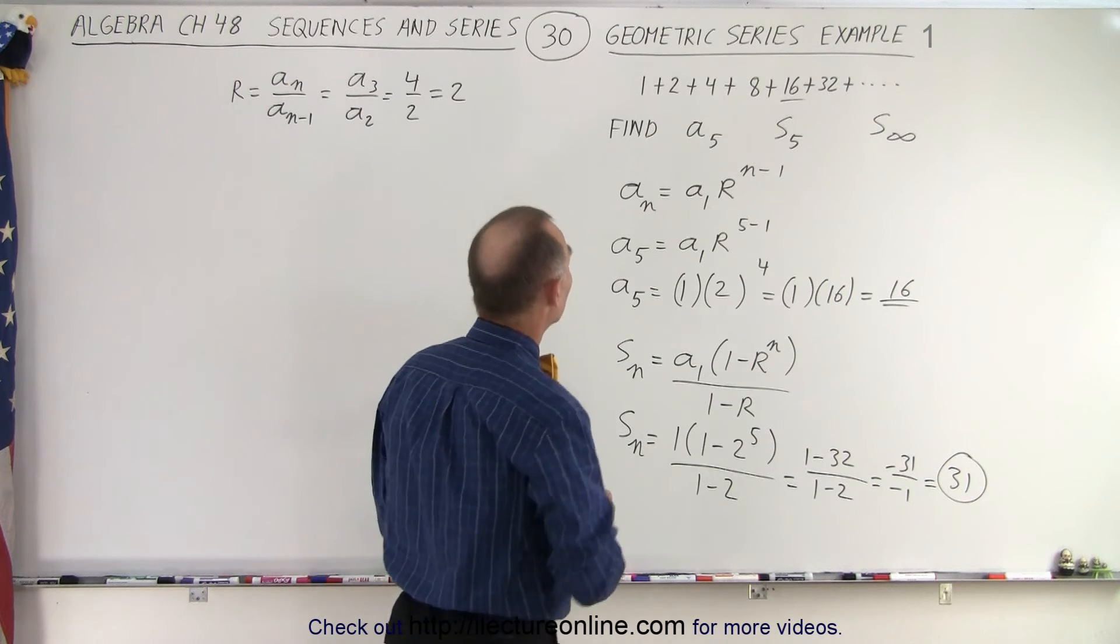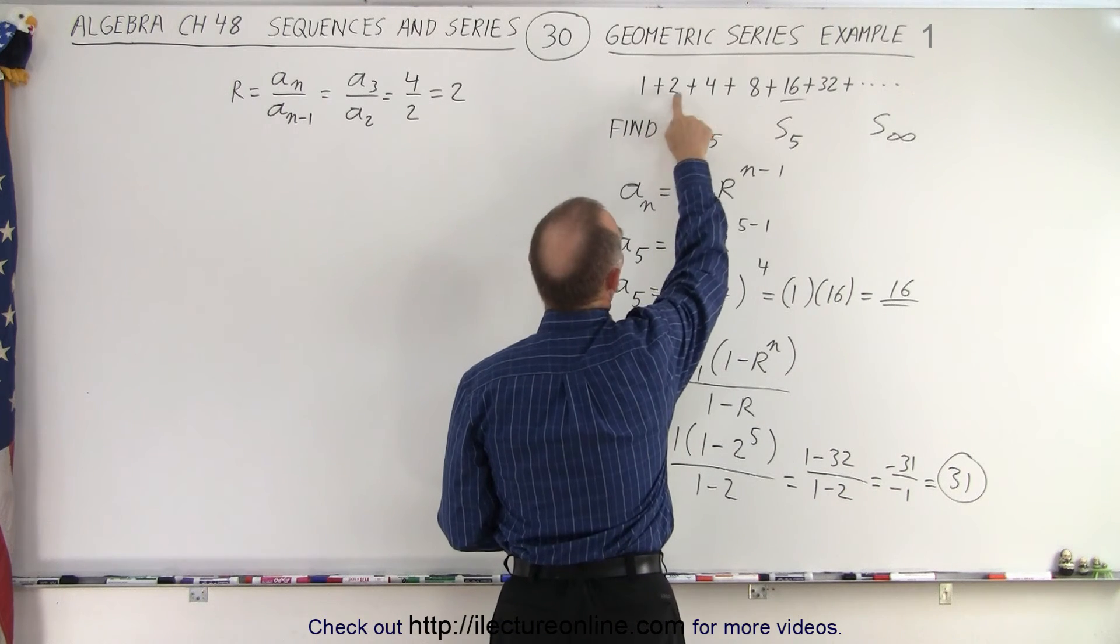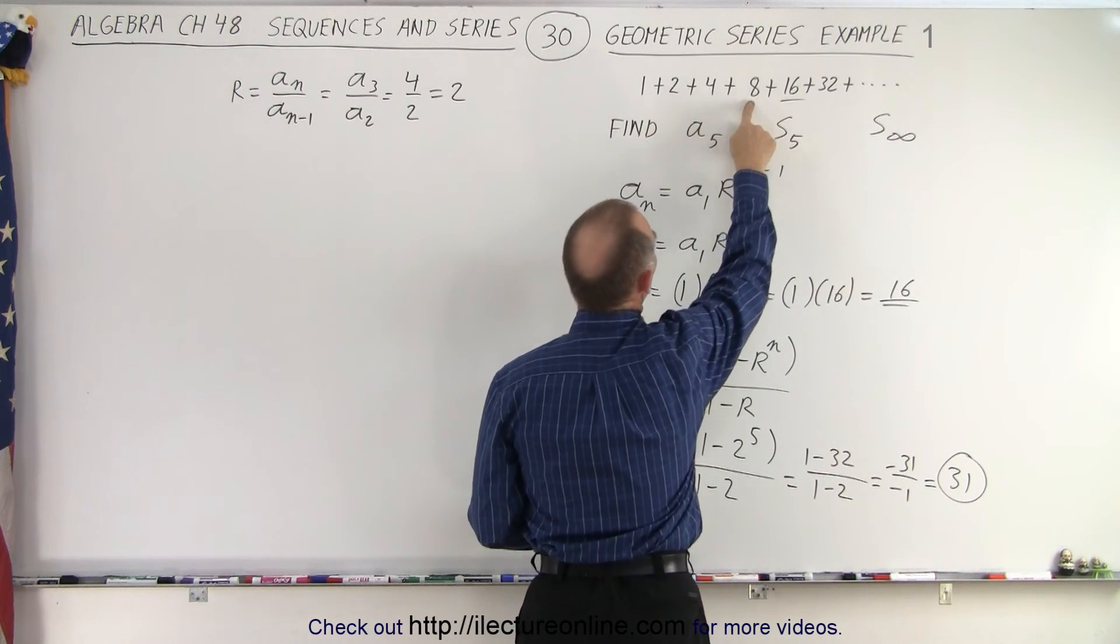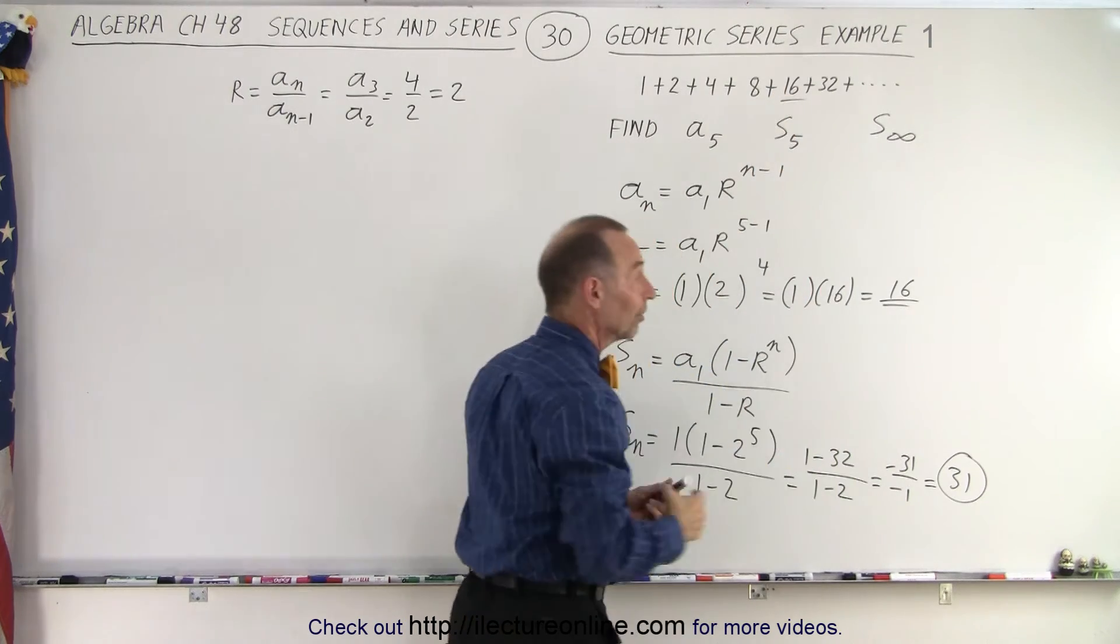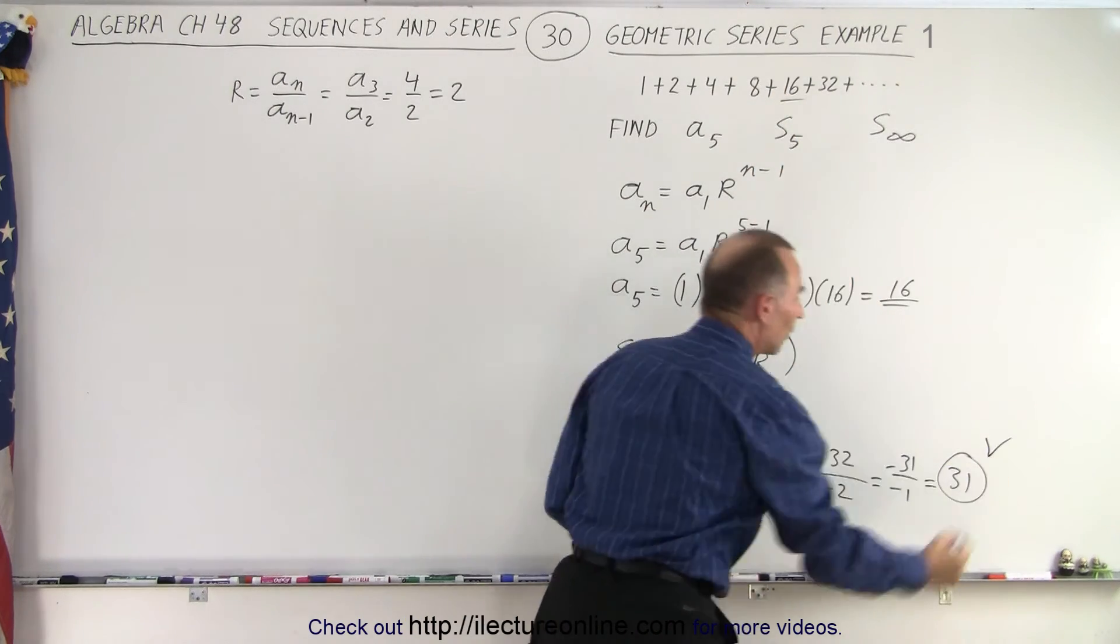Let's check and see that's true. 1 plus 2 is 3, plus 4 is 7, plus 8 is 15, plus 16 is indeed 31. So it looks like this is indeed correct.